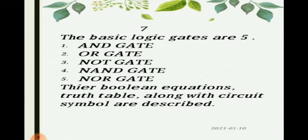As you know, logic gates are the basic building blocks for forming digital electronic circuitry. A logic gate has one output terminal and one or more input terminals. Its output will be high, represented by one, or low, represented by zero, depending on the digital levels at the input terminals, thus having the ability to perform a logic operation. In our last lecture we discussed that there are five basic logic gates: AND gate, OR gate, NOT gate, NAND gate, and NOR gate. Today we will discuss their Boolean equations, truth tables, and circuit symbols.